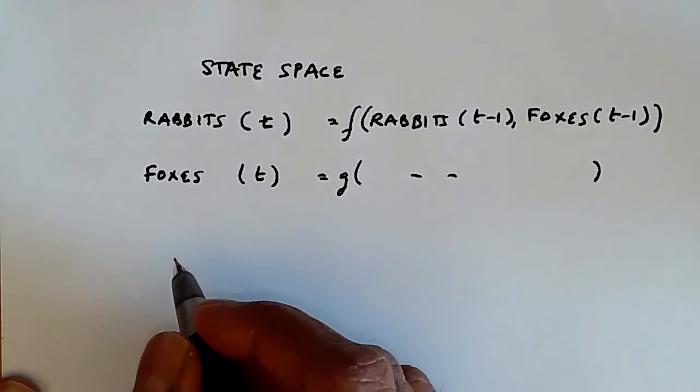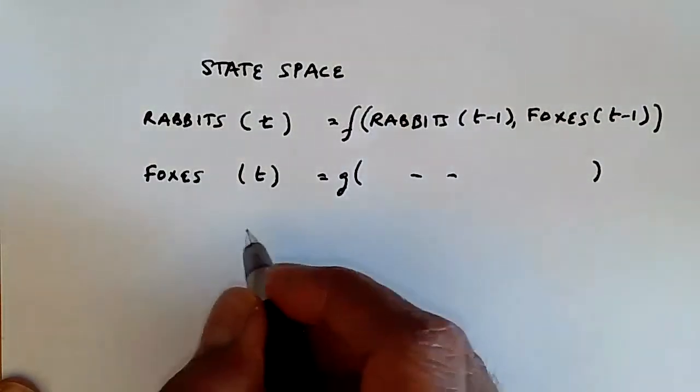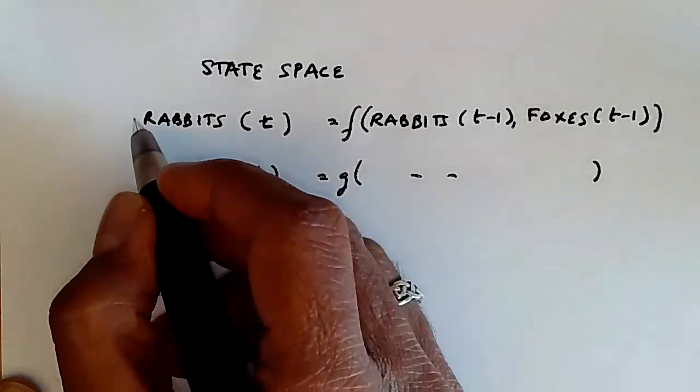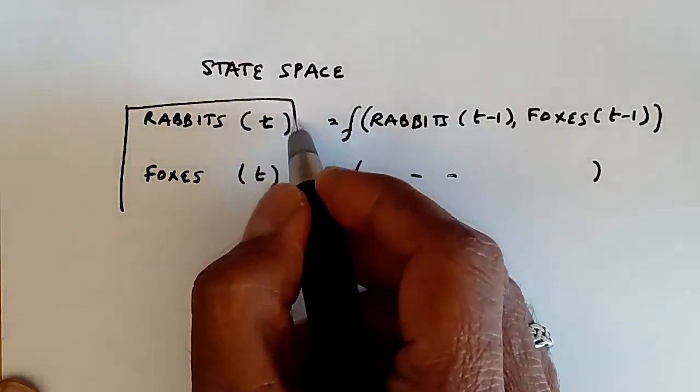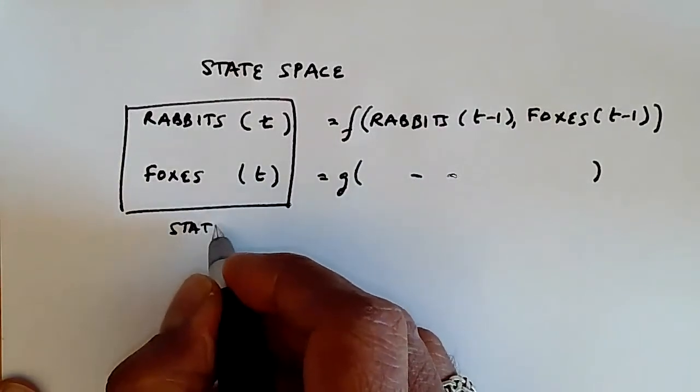What I want to focus on is not the f and g, but the fact that the state of the system is really these two values: the number of rabbits and the number of foxes. This is the state space.